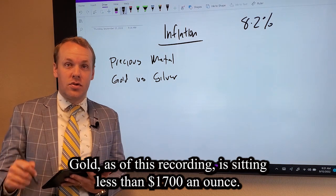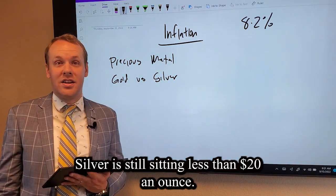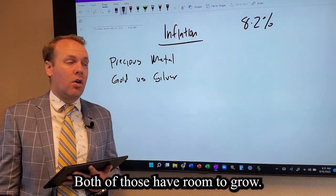Gold, as of this recording, is sitting less than $1,700 an ounce. Silver is still sitting less than $20 an ounce. Both of those have room to grow.